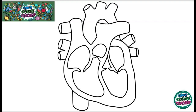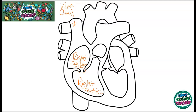Blood enters the heart through the vein called the vena cava and goes into the right atrium. There is a valve here that stops the back flow of blood and opens to allow it through into the right ventricle. Once in the right ventricle, the blood needs to be sent to the lungs to become oxygenated. Because blood is going away from the heart, it travels via the pulmonary artery to the lungs.